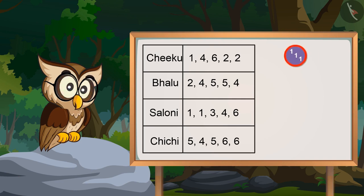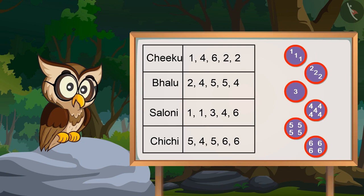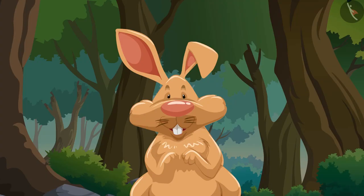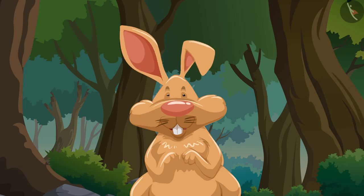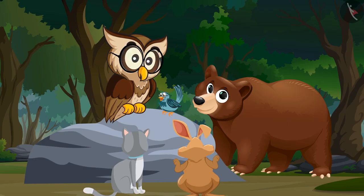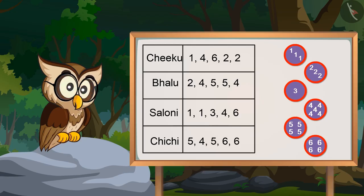We got one for three times, we also got two for three times. And like this, we can write all the different numbers. Oh wow! You have made a different set for all the numbers. First of all, we made a collection of all the numbers. And did you notice how I have arranged all the numbers from one to six in a way that makes it easy to gather the information?